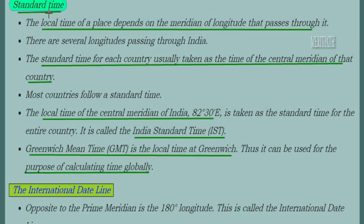Standard time is the local time of a place that depends on the meridian of longitude passing through it. Since several longitudes pass through a country like India, each country has a standard time taken from the time of its central meridian. For India, the central meridian is 82.5 degrees east, and this is the Indian Standard Time followed across the country. There is also Greenwich Mean Time (GMT), which is the local time at Greenwich and is used for calculating time globally. All countries add or subtract hours from GMT to follow their standard times.